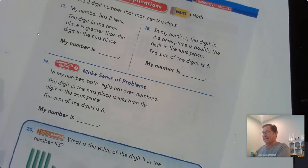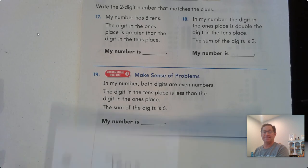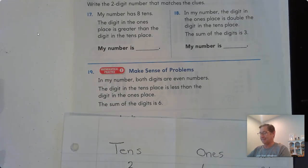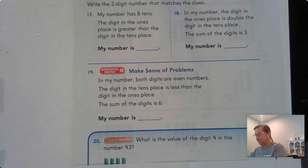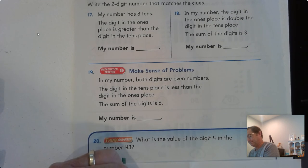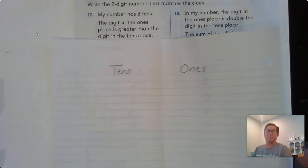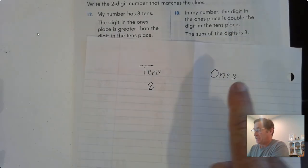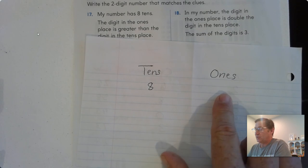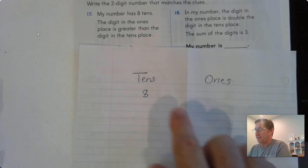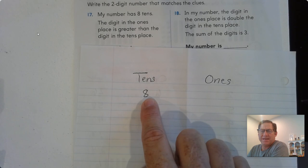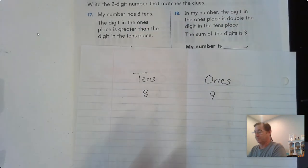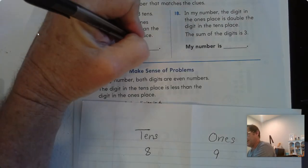Let's go to page 24. Problem 17: My number has 8 tens. The digit in the ones place is greater than the digit in the tens place. So what digit is bigger than 8? There's only one number, 9. So my number is 89.